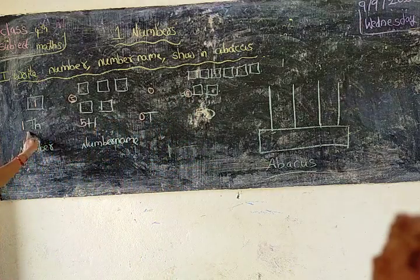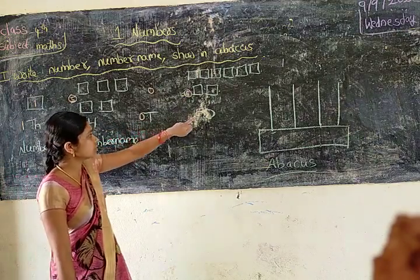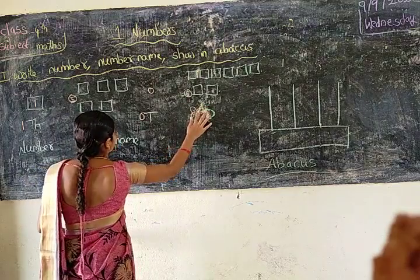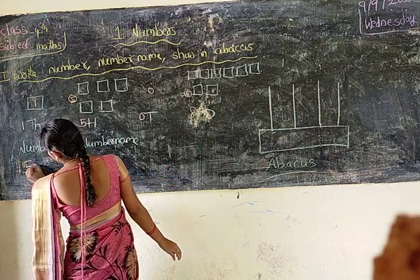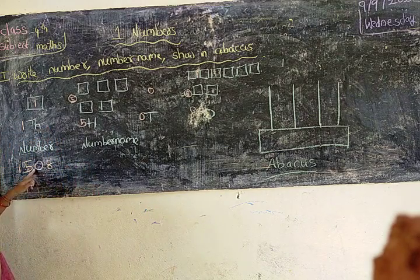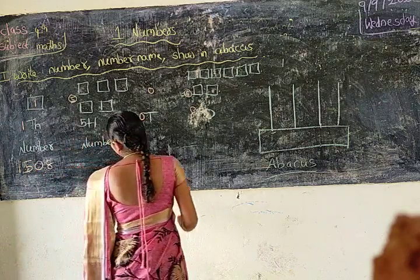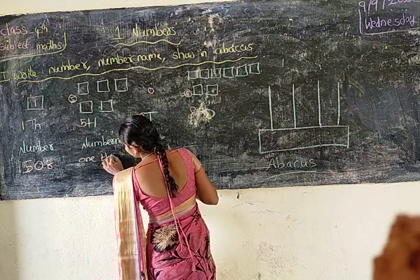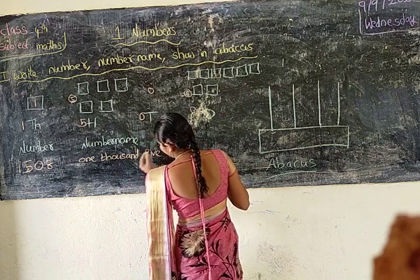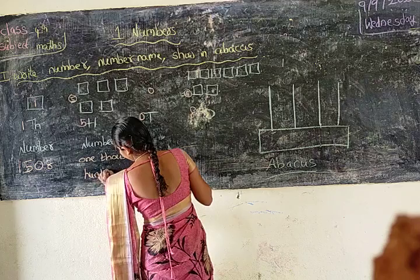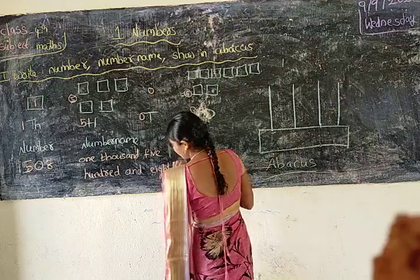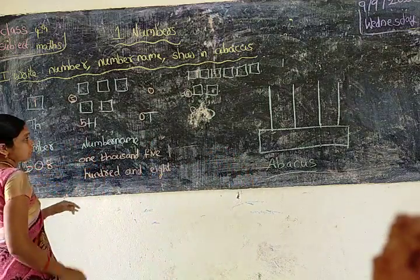So one thousand, five hundred, zero tens, and eight ones. That is one thousand, five hundred and eight. In tens we have zero. So the number is completed and the number name is completed.